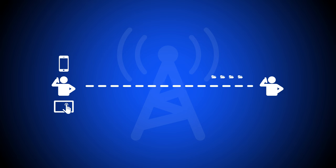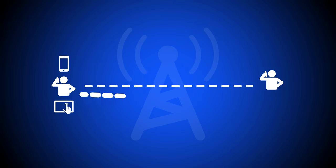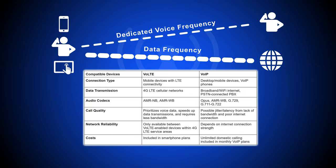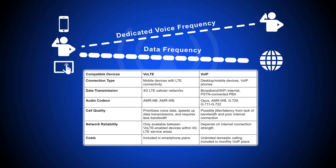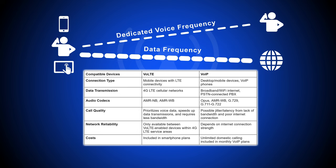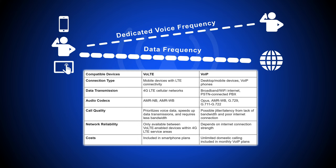Unlike VoIP, Voice over LTE transmits voice data packets via the LTE network on a separate radio frequency. This dedicated line prioritizes voice data packets over all other types, meaning fewer dropped calls and a higher overall call quality. The comparison table here outlines the most important differences between Voice over LTE and VoIP.